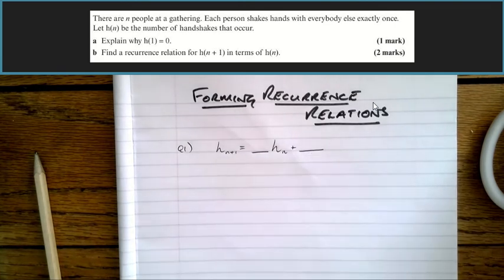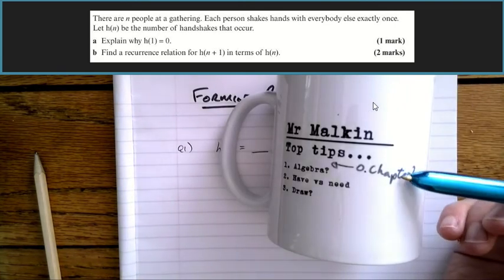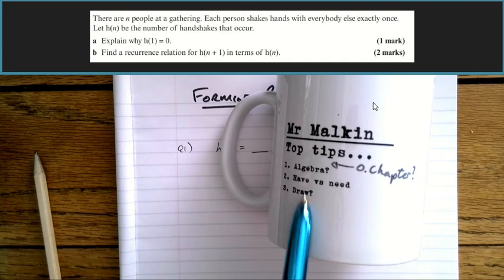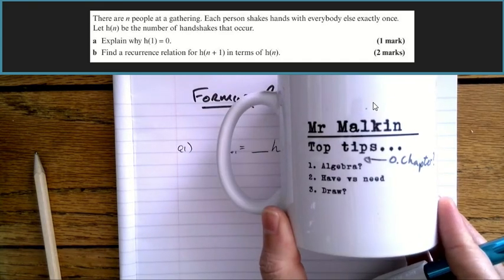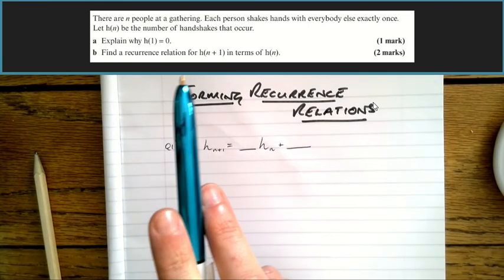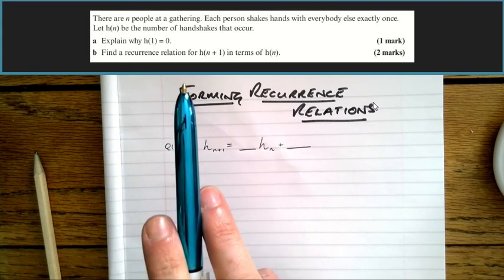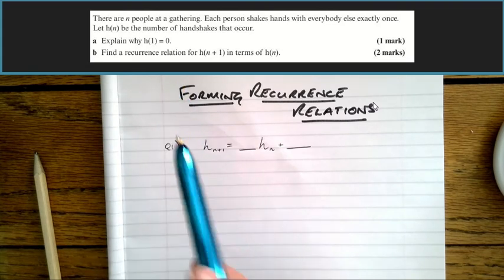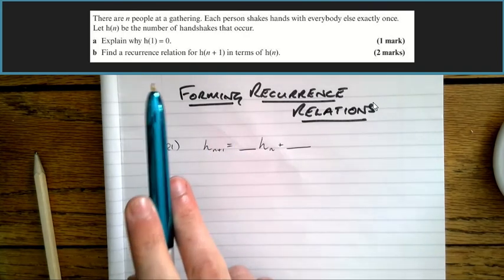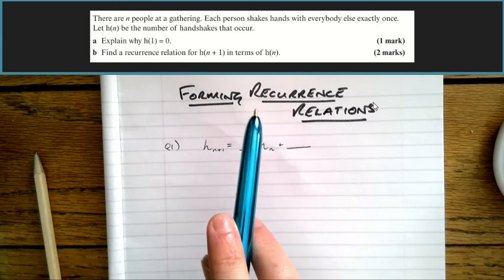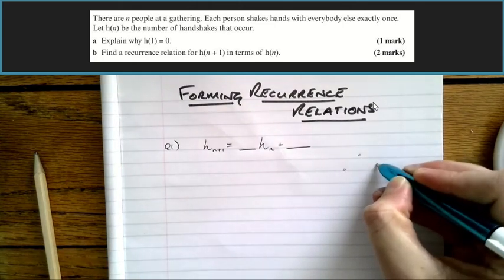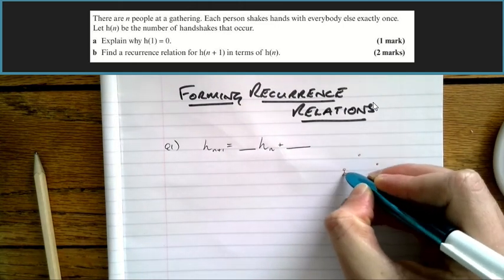What we've done is apply 'what chapter is it' and 'what algebra can I write down'. For what can I draw — for some questions that's about drawing a graph or something mathematical, but here I think what helps is just drawing the setup. Even drawing little stick figures shaking hands might help if you're stuck and don't know a way in. We've got a certain number of people at a gathering and each person shakes hands with everybody else exactly once, so let's draw, say, five people.